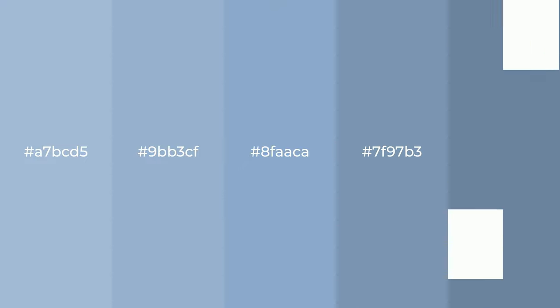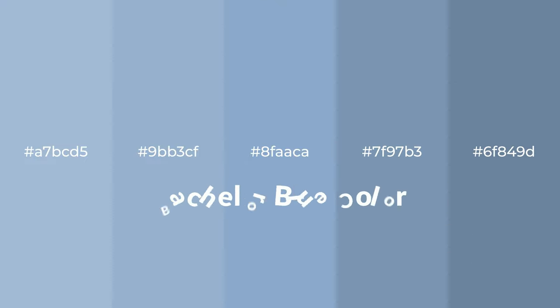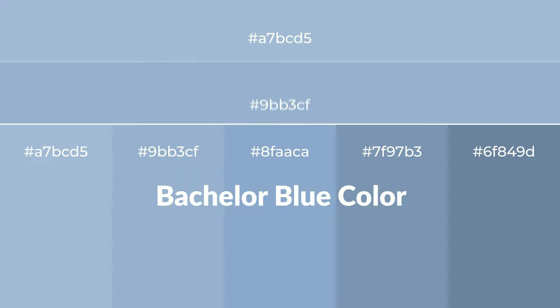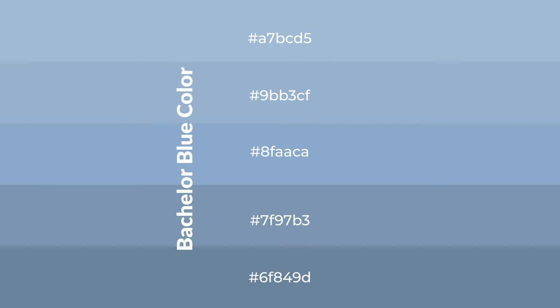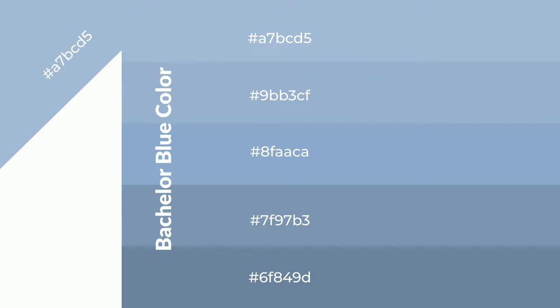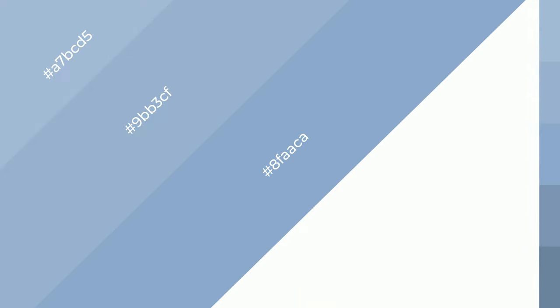Cool shades of bachelor blue color with a blue hue for your next project. To generate tints of a color, we add white to the color. Tints create light and exquisite emotions. To generate shades of a color, we add black to the color. Shades are used in patterns, 3D effects, and layers — they create depth and drama.